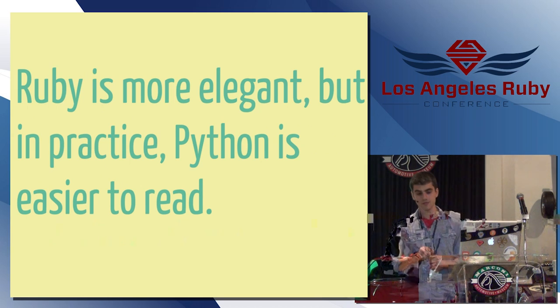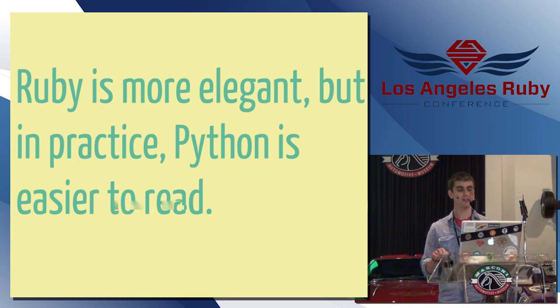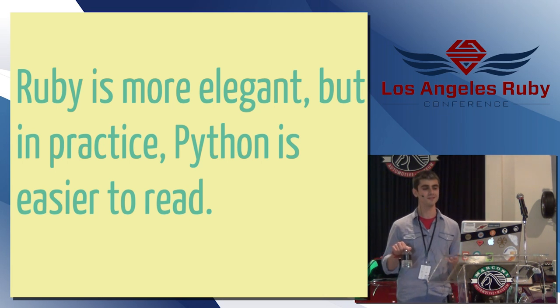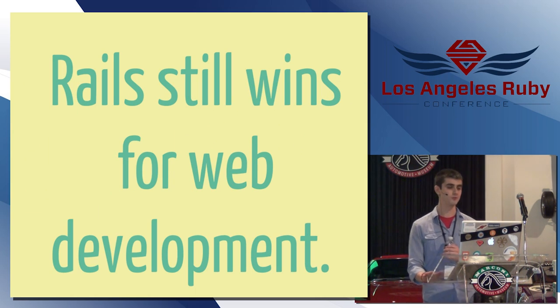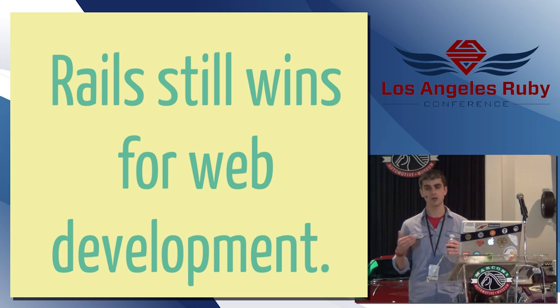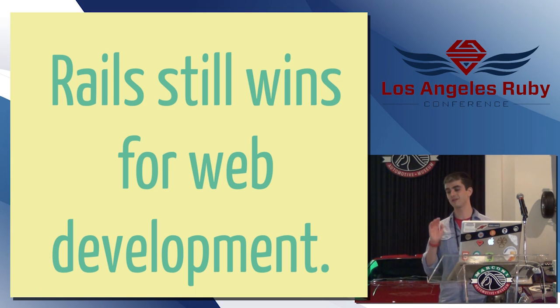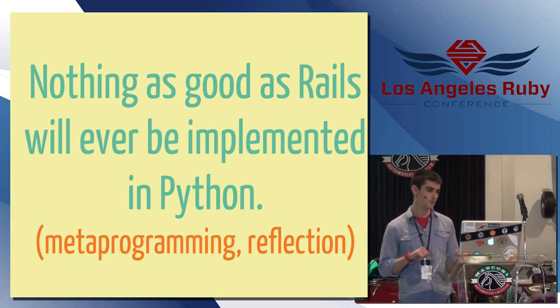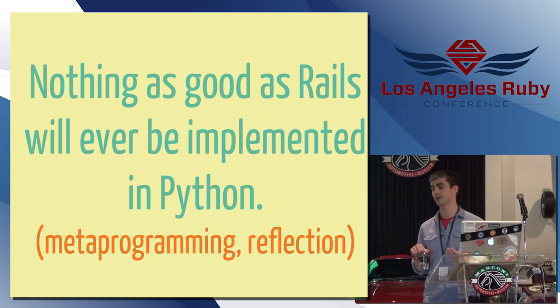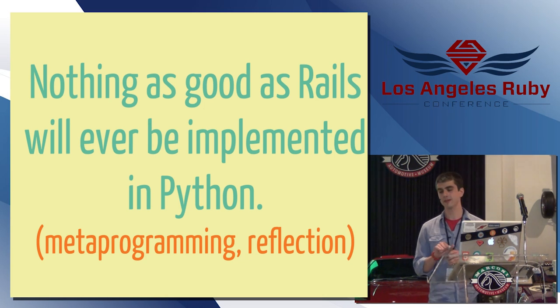I do think Ruby is more elegant. Like I feel like you can, it's more powerful. You can do more expressive things. But in practice, Python just seems to always be easier to read. As much as I want Ruby to be easier to read. And I would say Rails still wins for web development. If you're doing a web development project, I would generally still pick Rails or maybe Sinatra if it was a small project. You know, unless there's some specific concern that lends itself to Python. Maybe Windows deployment or something very tied to the Django use case. And I think that nothing is good as Rails will ever be implemented in Python. Because, like I said, the different types of meta programming and reflection features that you get in Ruby allow for some of the more interesting Rails features. And I think that you just wouldn't be able to have the same type of interface in Python.